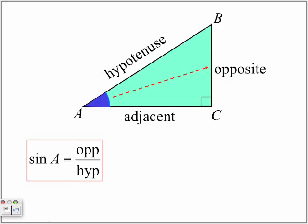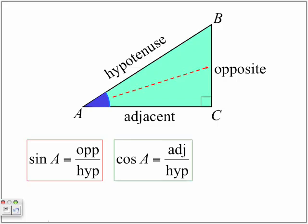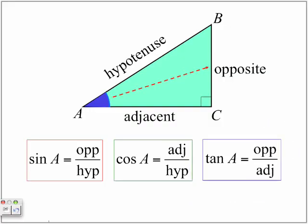Sine A is the opposite divided by the hypotenuse. Cosine A is the adjacent side divided by the hypotenuse. And the tangent ratio for angle A is the opposite divided by the adjacent.